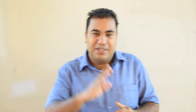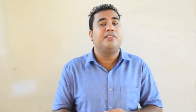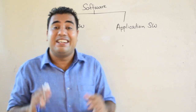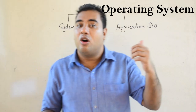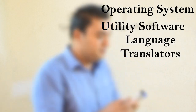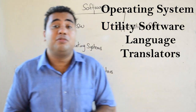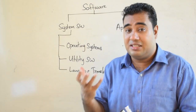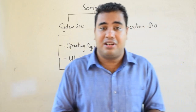System software is used to perform the works of the system or computer. It is mainly used to maintain and manage the computer and its resources. System software can be further classified as operating systems, utility software, and language translators.